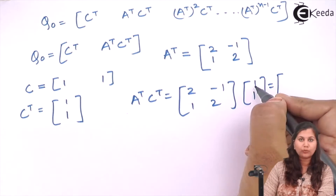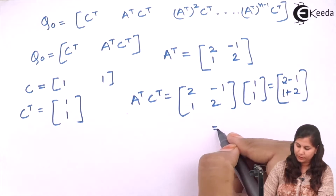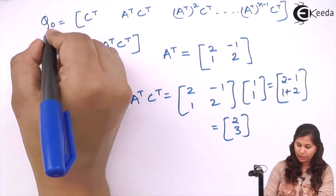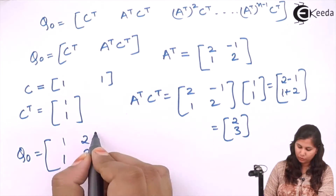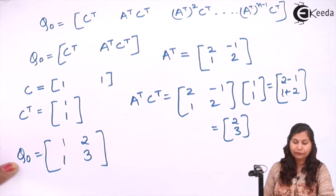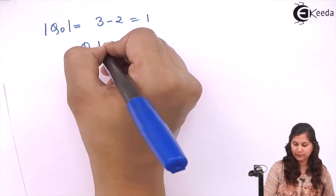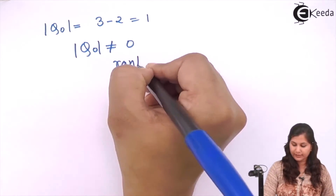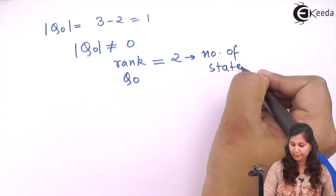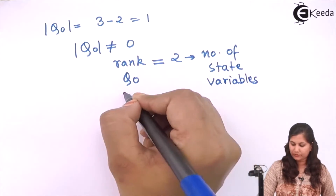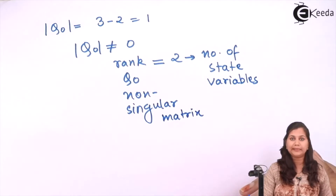Multiplying A^T by C^T: [2, -1; 1, 2] × [1; 1] gives 2×1 + (-1)×1 = 1... wait, it comes out to be [2-1; 1+2] = [1... so it will be 2 and 3. So Q0 = [C^T | A^T·C^T] = [1, 2; 1, 3]. The determinant is 3 - 2 = 1, which is not equal to 0, so the rank of Q0 is 2, equal to the number of state variables. It is non-singular, and hence the system is completely observable.